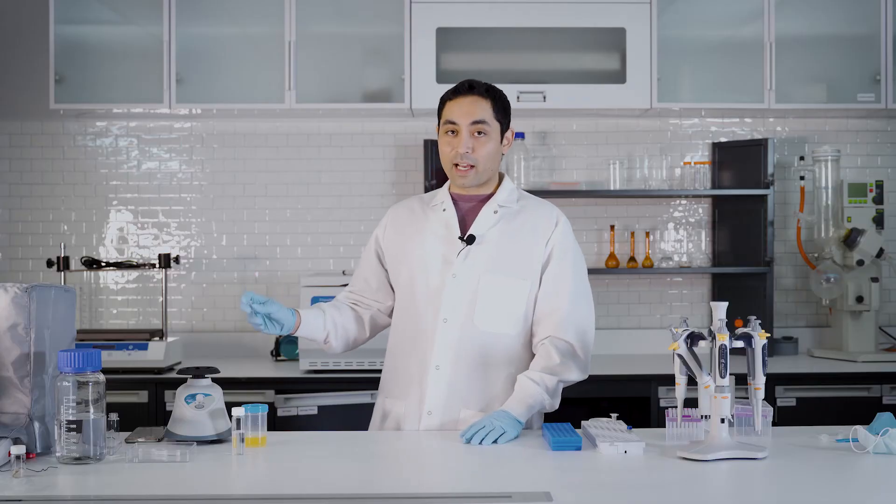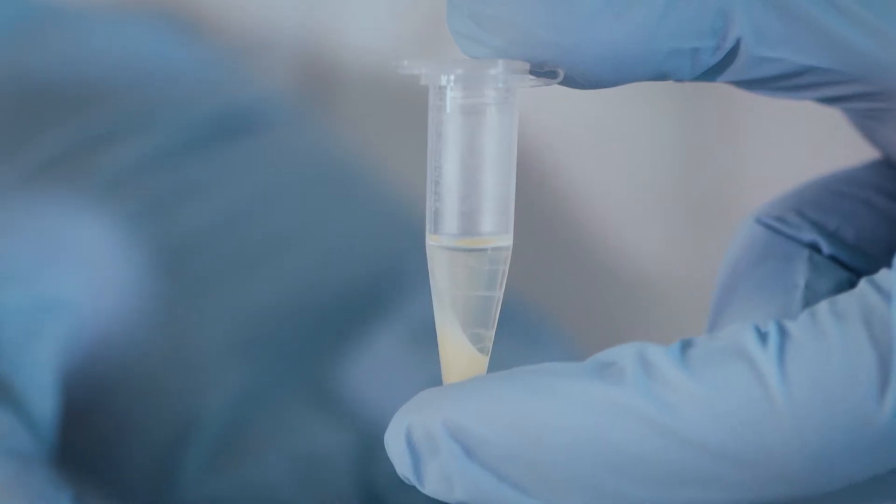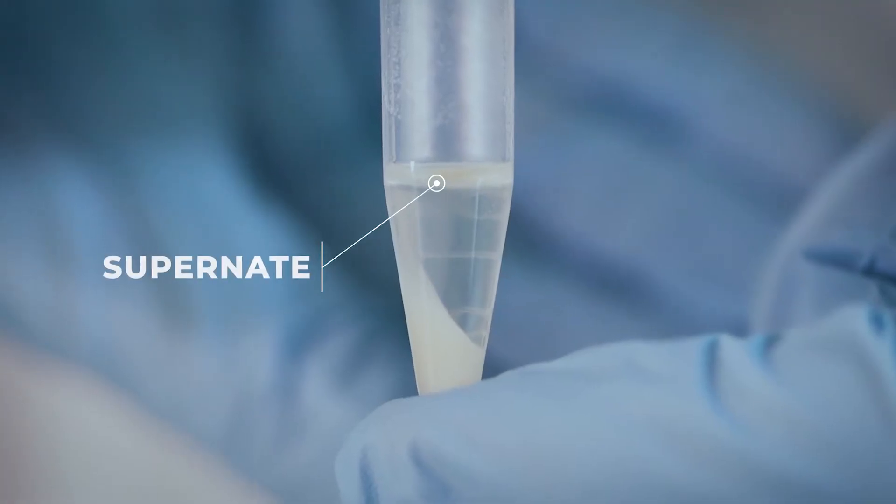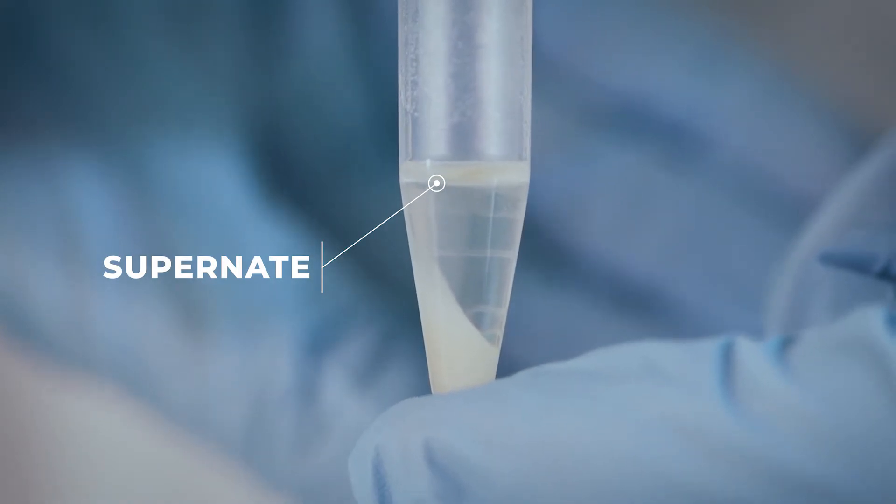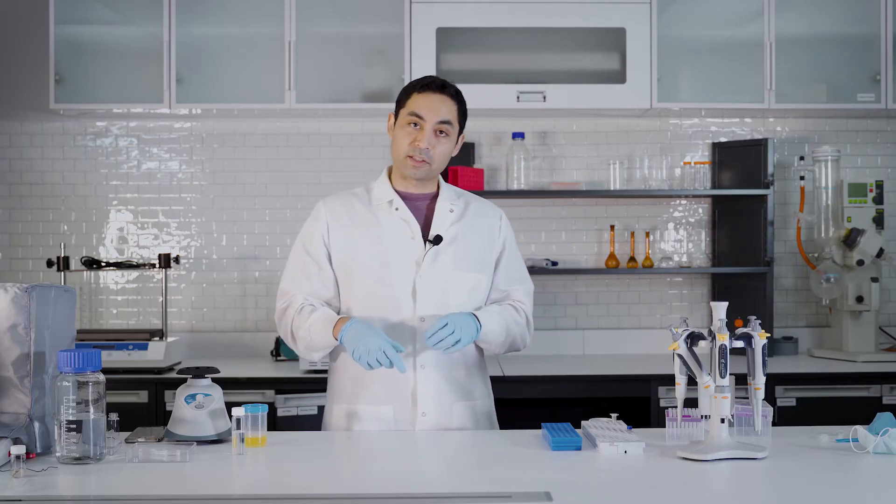Now that it's spun down you can see that there's two layers and then we just want the supernatant, which is just the stuff on the top. So we're gonna take that and we're gonna get that into an HPLC vial.